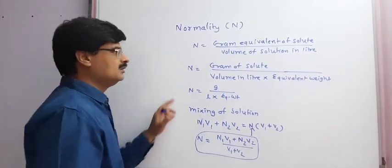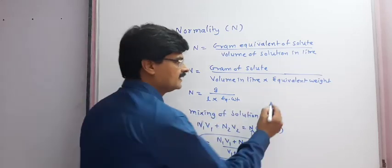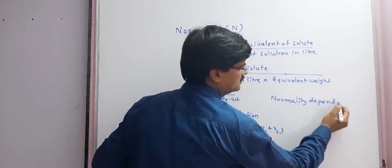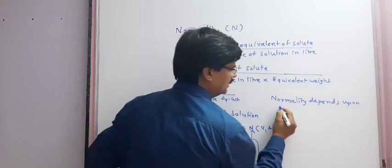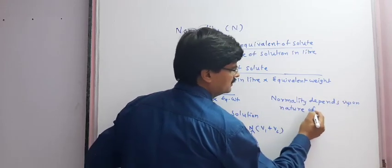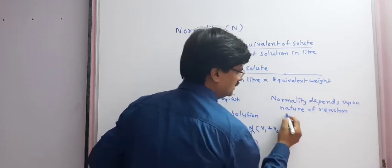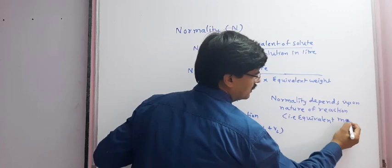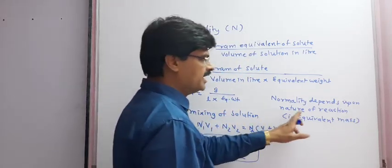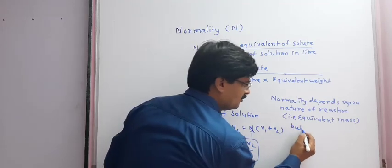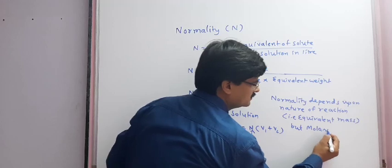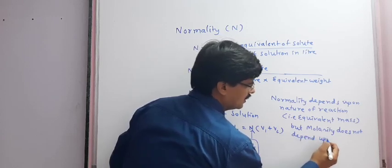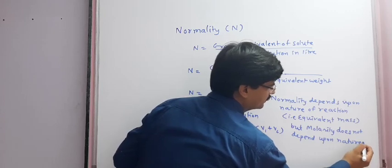If solutions are mixed, we can utilize the formula N1V1 plus N2V2 equals N(V1 plus V2). It means normality of the solution N equals (N1V1 plus N2V2) upon (V1 plus V2). Also, normality depends upon nature of reaction (equivalent mass), but molarity does not depend upon nature of reaction.